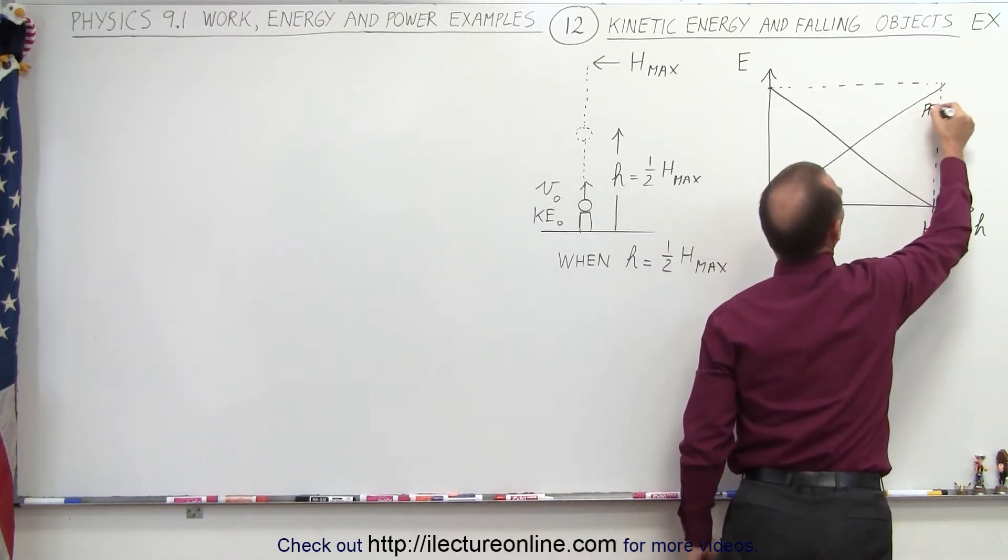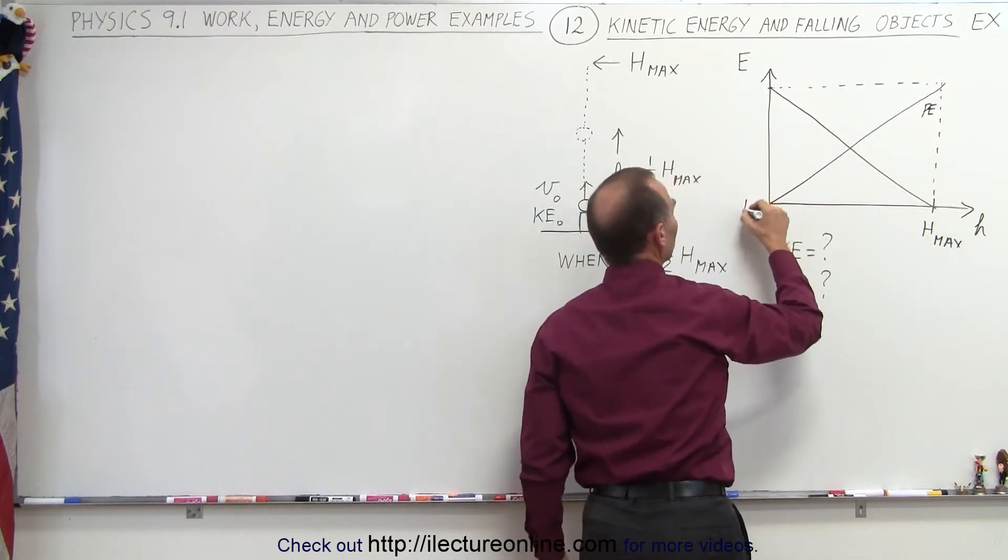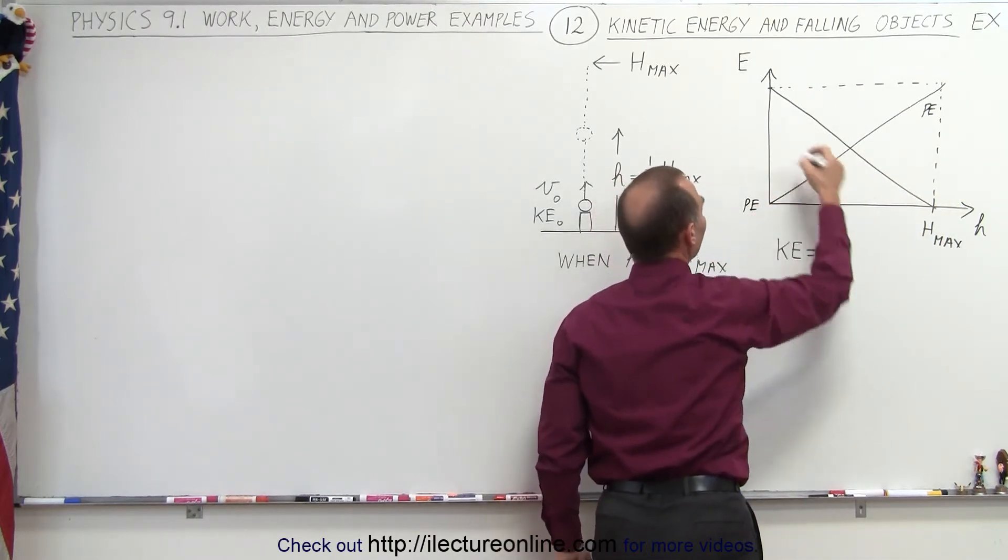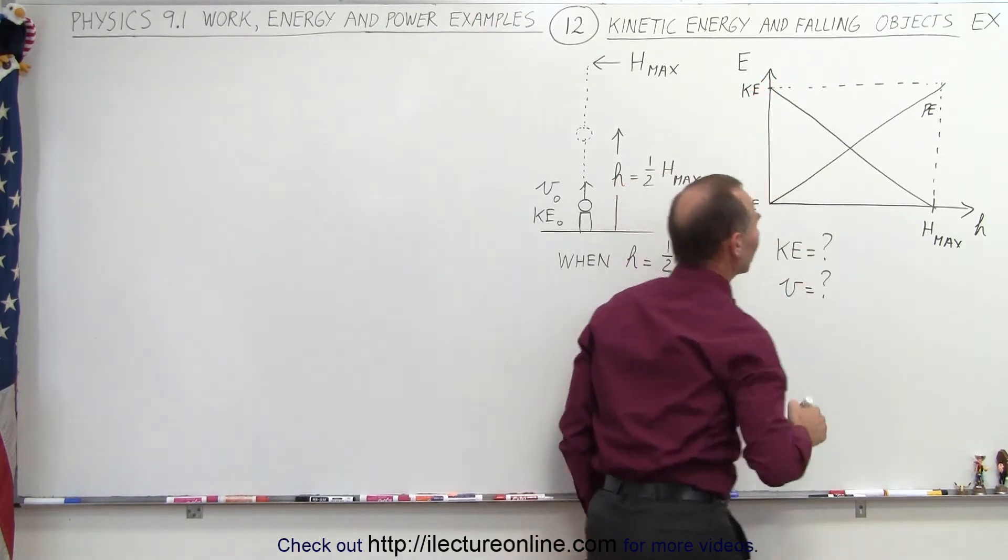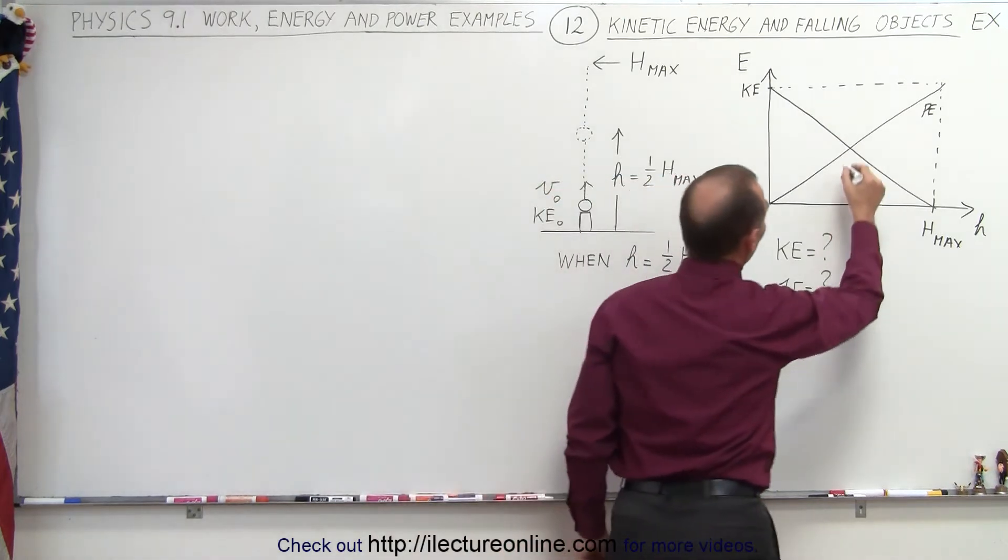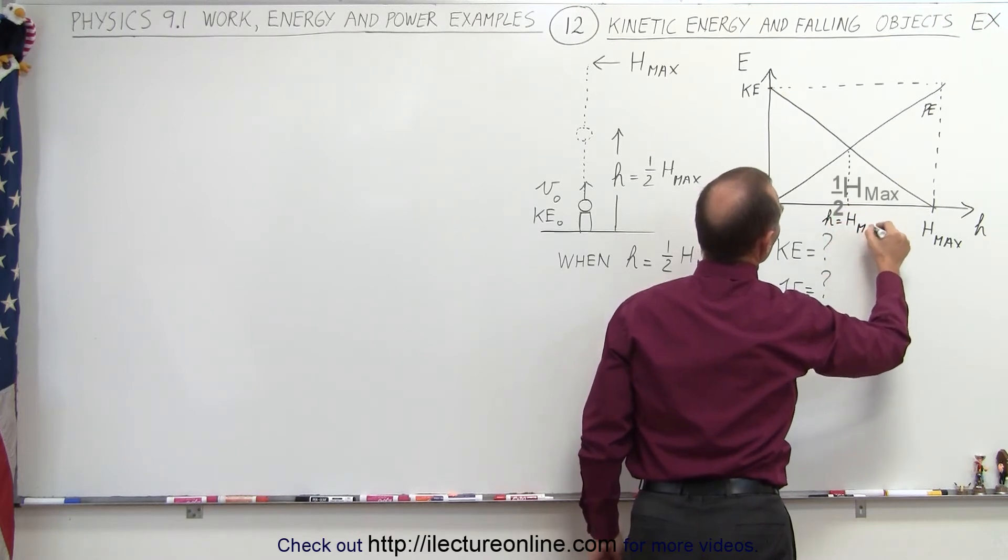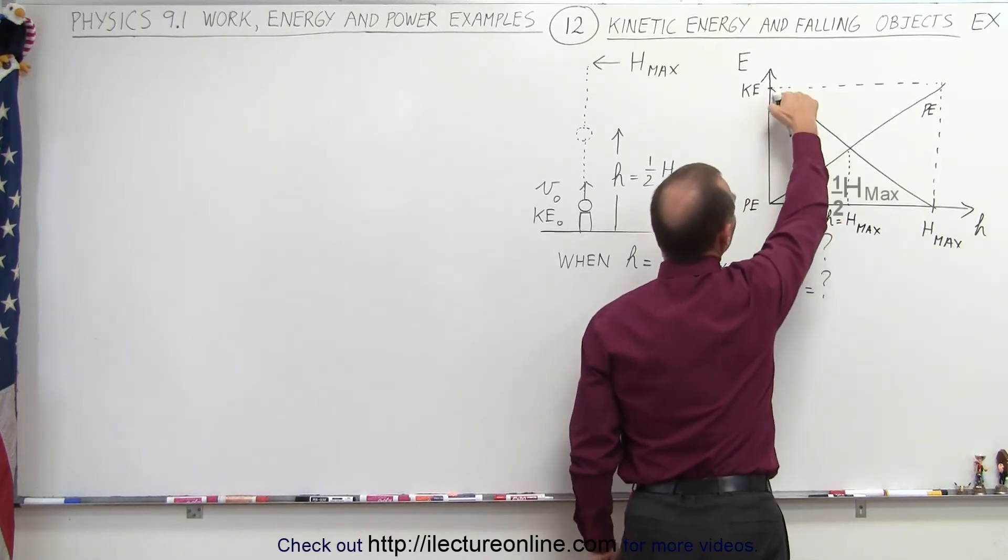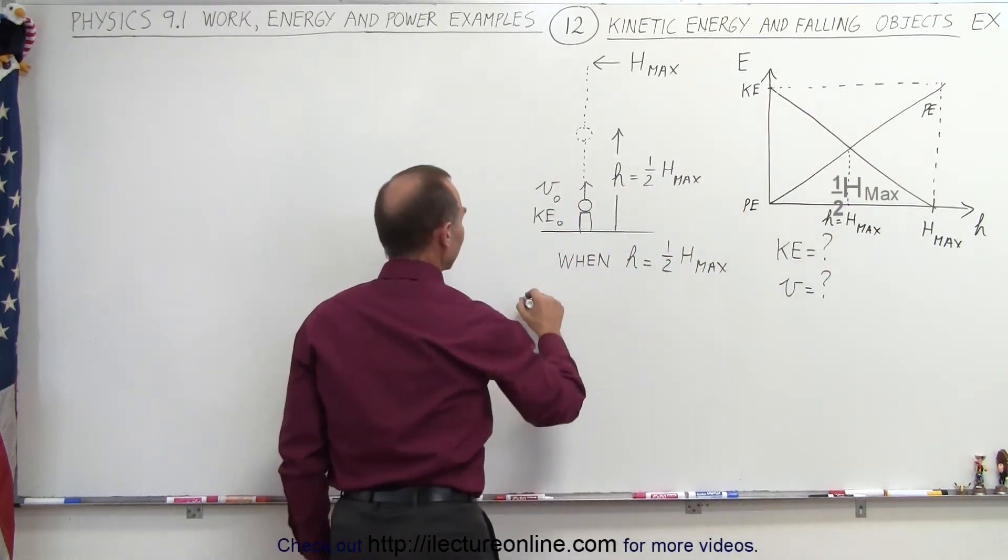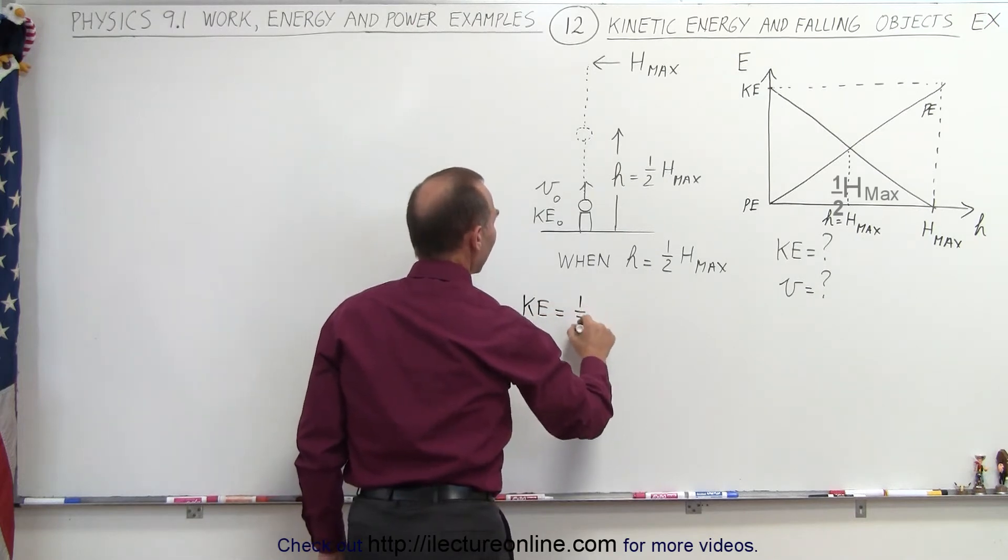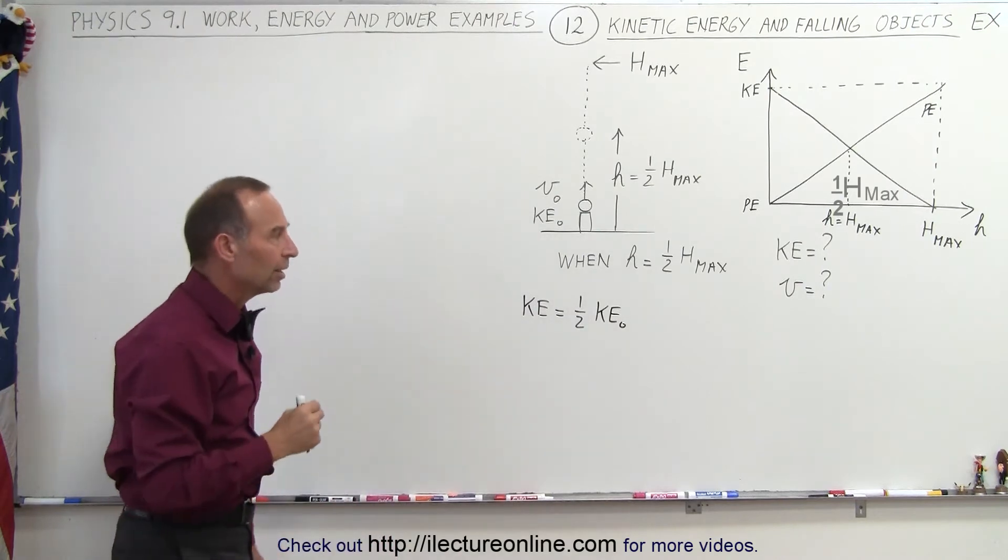So potential energy would increase as we're gaining height and kinetic energy would decrease as we're gaining height. Potential energy starts at zero when we have zero height and kinetic energy will have its maximum value when we have zero height. And you can see then that at the halfway point where H is equal to half H-max, that half the kinetic energy that we had has now been converted into potential energy. So we can say that the kinetic energy will be one-half the original kinetic energy that we had when we started, again because of that linear relationship.